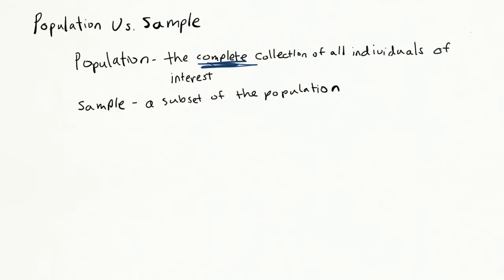Let me draw an example. Here, this is the population and the sample comes directly from within the population. The notation for the data in the population is x1, x2, all the way through x capital N.